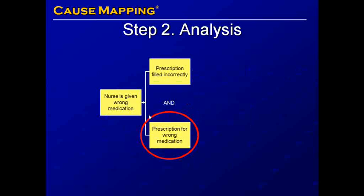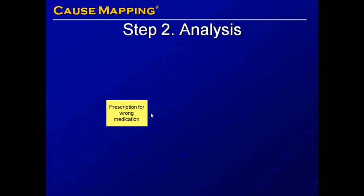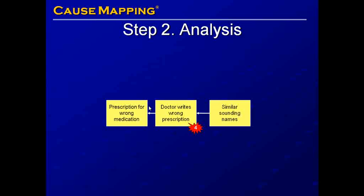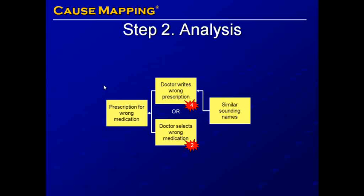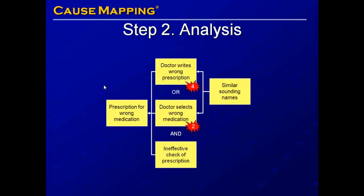Let's add more detail about the prescription being for the wrong medication. The prescription might be for the wrong medication if the physician writes the wrong prescription — an error at step 4 in the process — potentially because of similar sounding names of medications. Or the doctor may select the wrong medication, which is an error at step 2 in the process, also potentially due to similar sounding names. We also have an ineffective check of the prescription; if the wrong medication gets to the patient, there were ineffective checks at every step of the process.